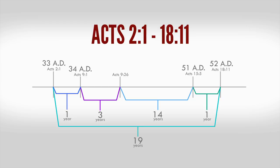The events of Acts 9:1 through 25 will therefore cover events occurring from mid-34 AD to late-36 AD. Our third block of time, Acts 9:26 through 15:4, will cover from 37 AD on into 51 AD. This will put Paul in Corinth from 51 through 52 AD. We will further break our third block of time into the period from Acts 9:26 to Acts 12:1, which will be 37 AD through 41 AD to when Herod Agrippa began his reign, and Acts 12:1 through Acts 15:4, which will be 41 AD through 51 AD.